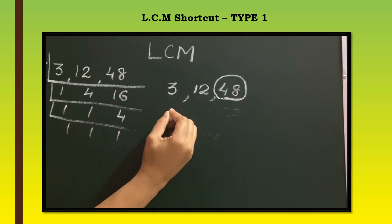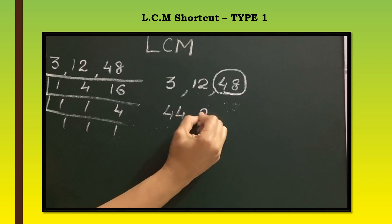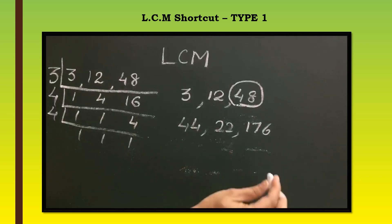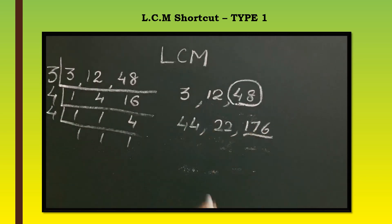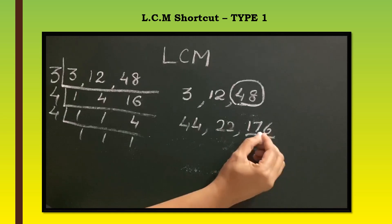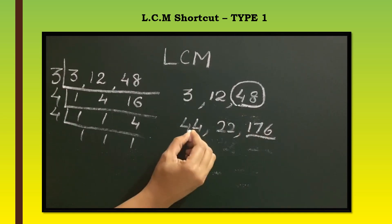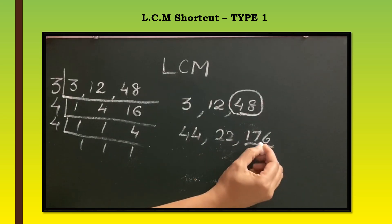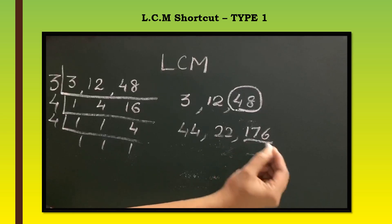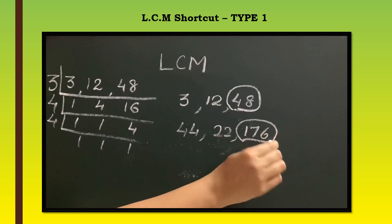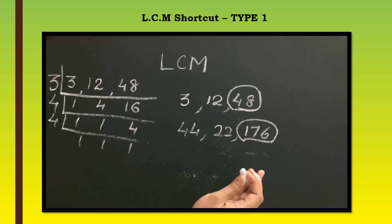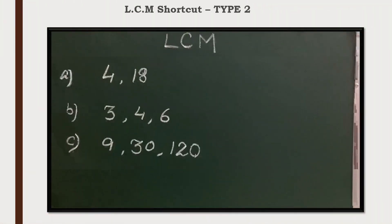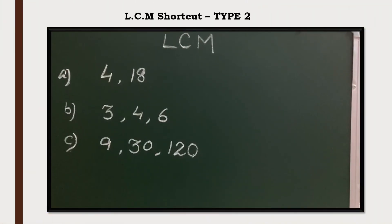Another example: 44, 22, and 176. Without doing the L method, we can easily tell the biggest number — 176 is the LCM, because 176 is a multiple of 44 (44 fours are 176), and 22 eights are 176. So if the numbers are multiples of each other, the biggest number is the LCM. That is Type 1.